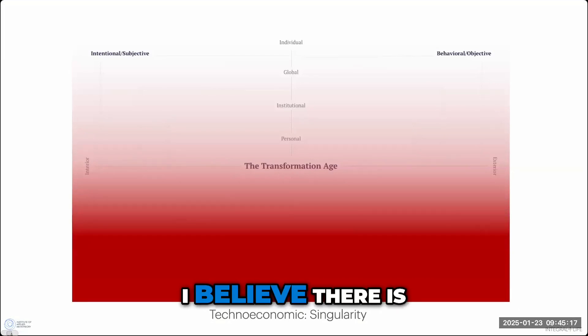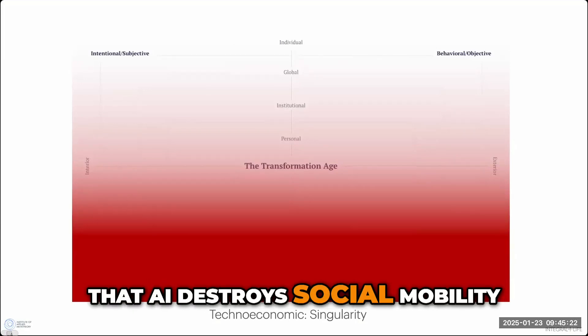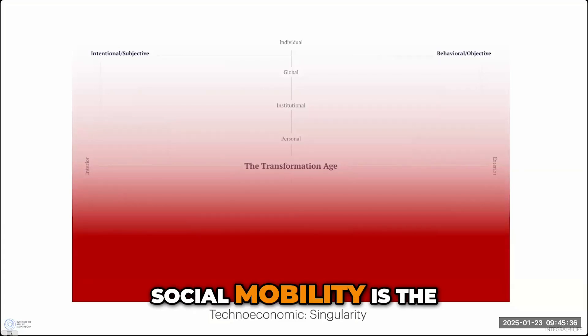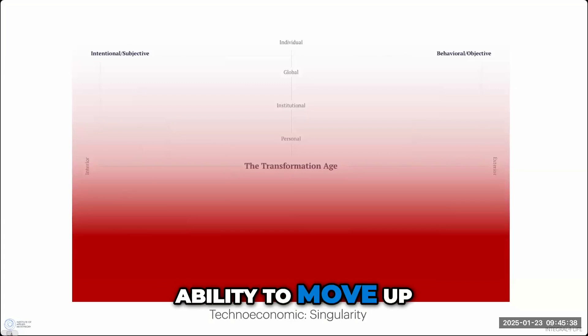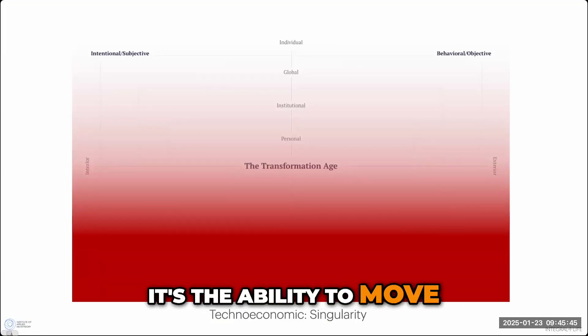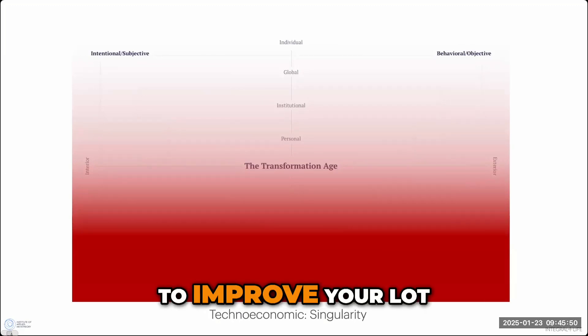I believe there is a very real risk that AI destroys social mobility, for example. Social mobility, as you might know, is the ability in a, especially in a modern democratic world that we've seen a lot of, social mobility is the ability to move up and down the class ladder. For lack of a better term, it's economic opportunity. It's the ability to move, the ability to, through hard work, effort, risk-taking, etc., to improve your lot.